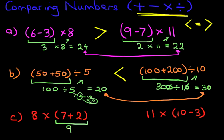7 plus 2 is 9. And then we do the first part — so we've got 8 times 9. What is 8 times 9? You should know this from your 8 times table or your 9 times table. 8 times 9 is 72.